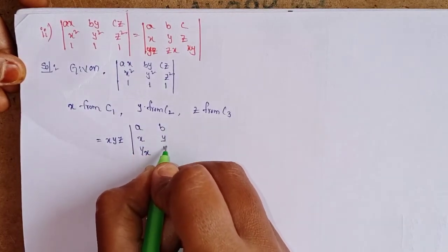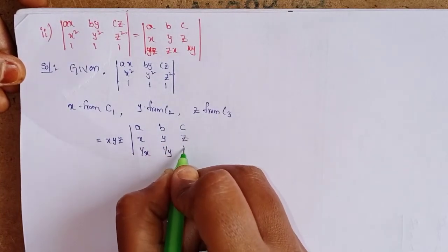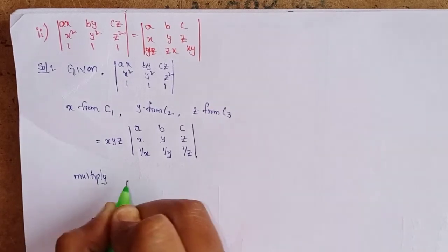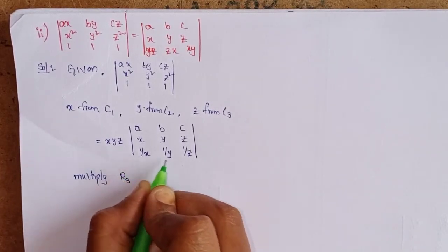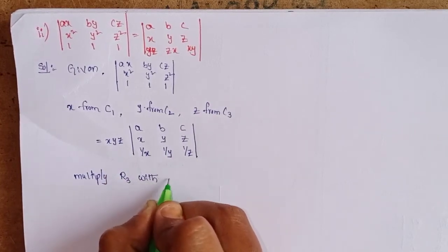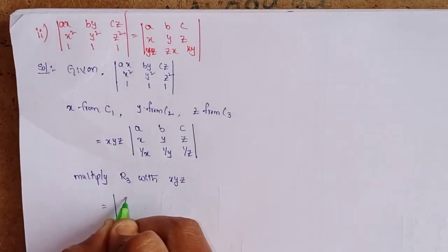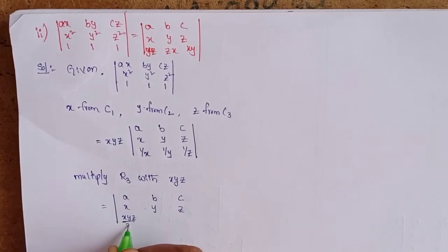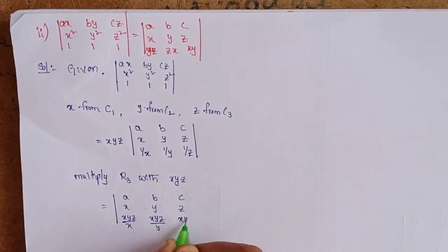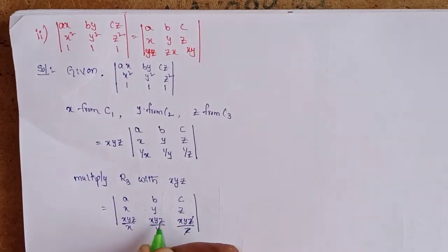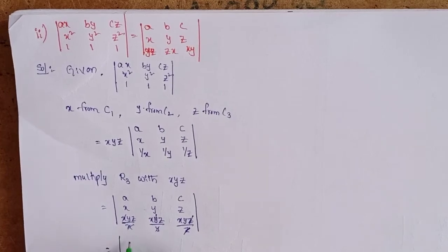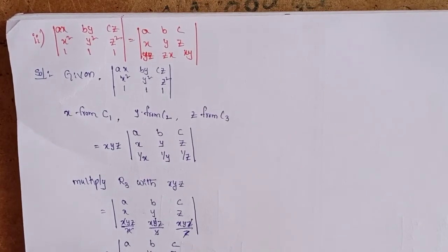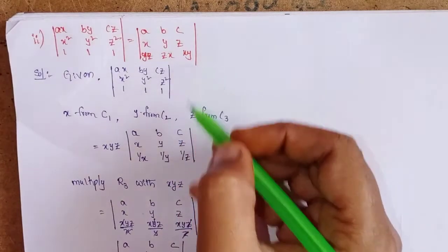Next, multiply R3 by xyz — write R1 and R2 as they are, and in R3 multiply by xyz. Then xyz in row 3 cancels with the 1/x, 1/y, 1/z: x cancels, y cancels, z cancels. What remains in R3 is [yz, zx, xy]. So we get the determinant of [a, b, c; x, y, z; yz, zx, xy], which is the RHS.